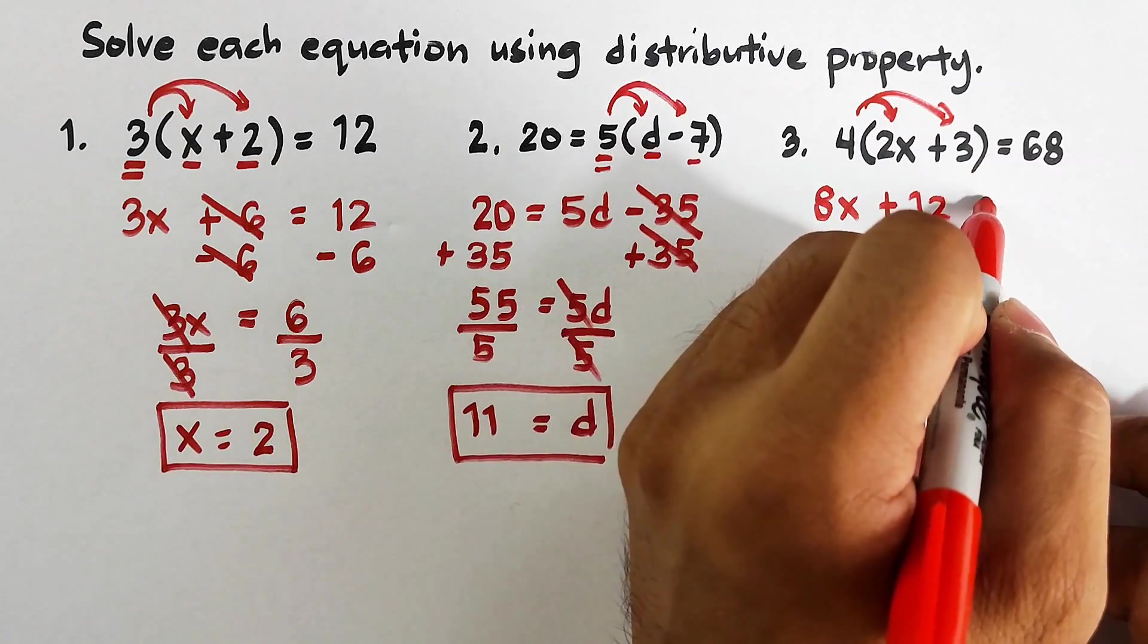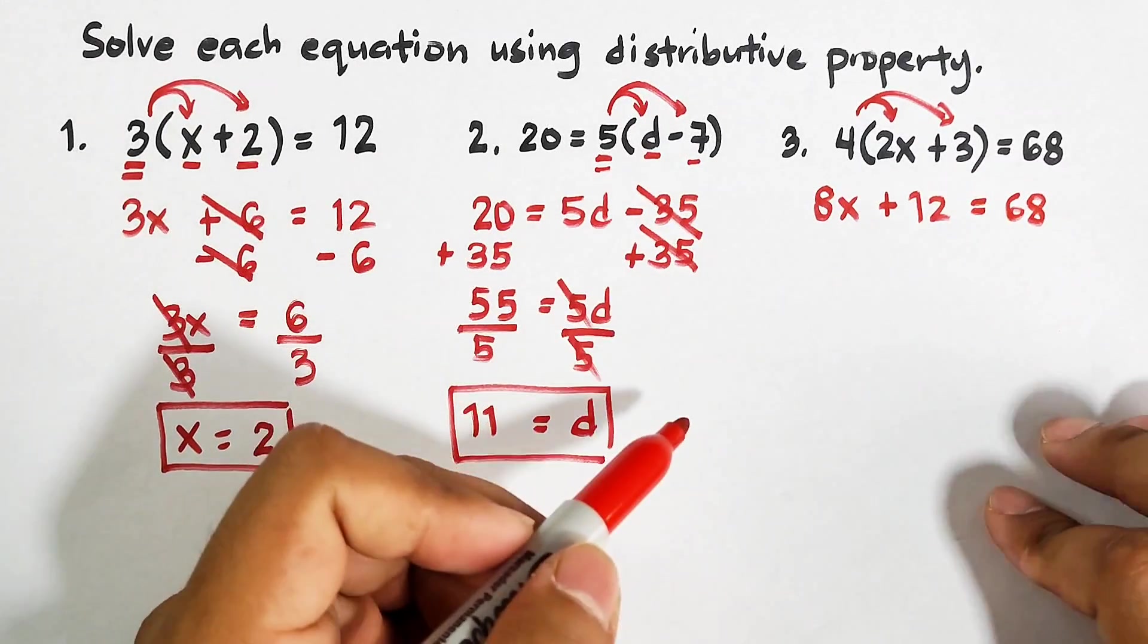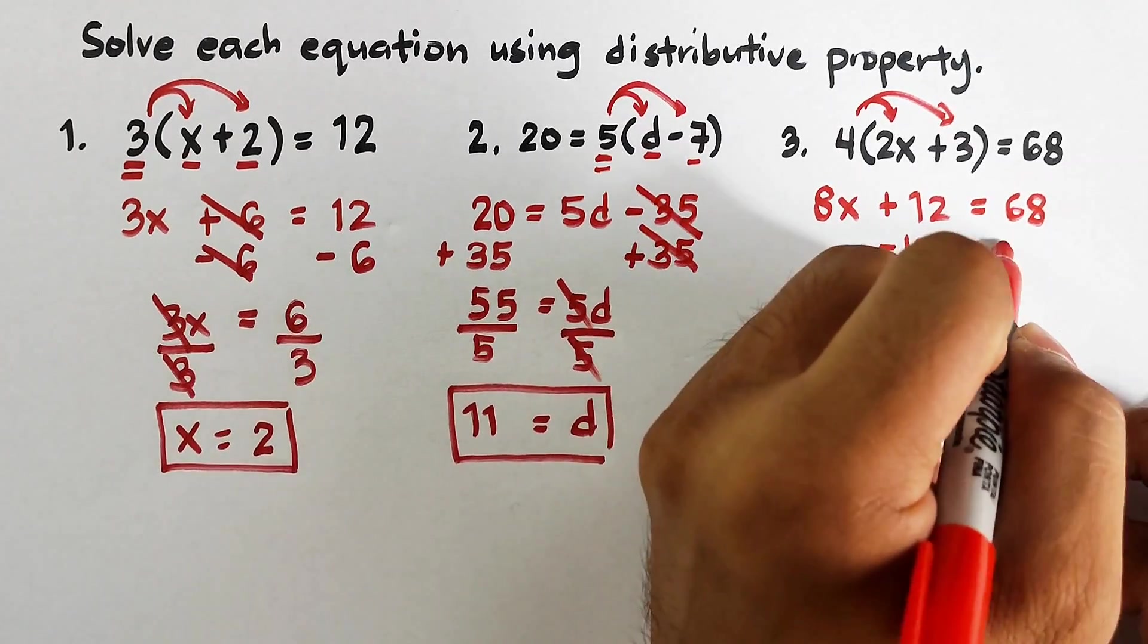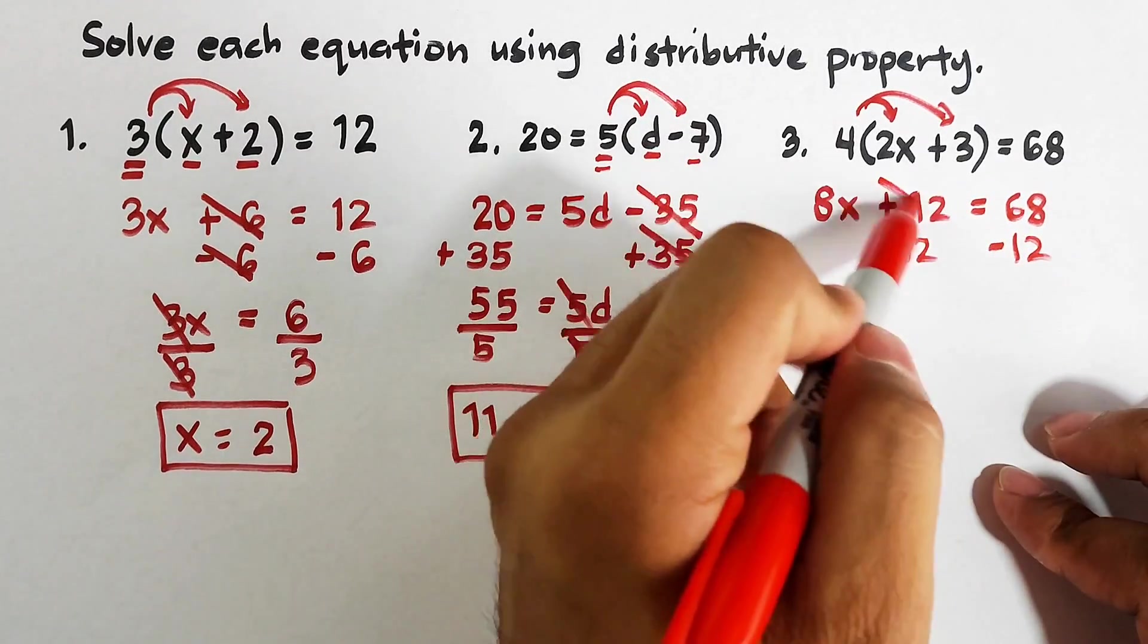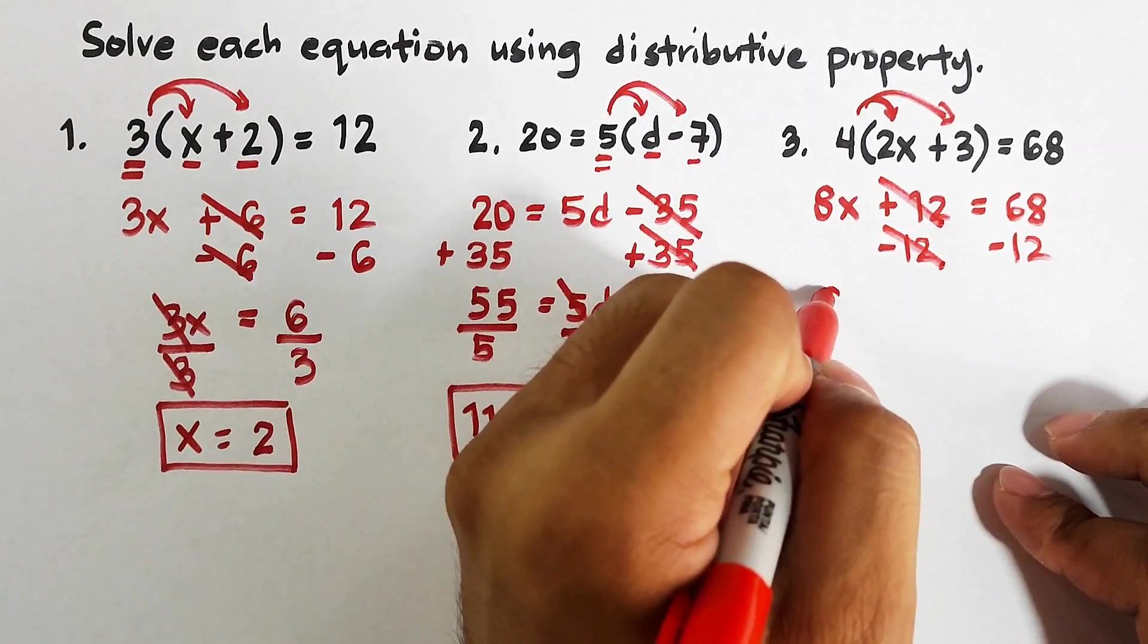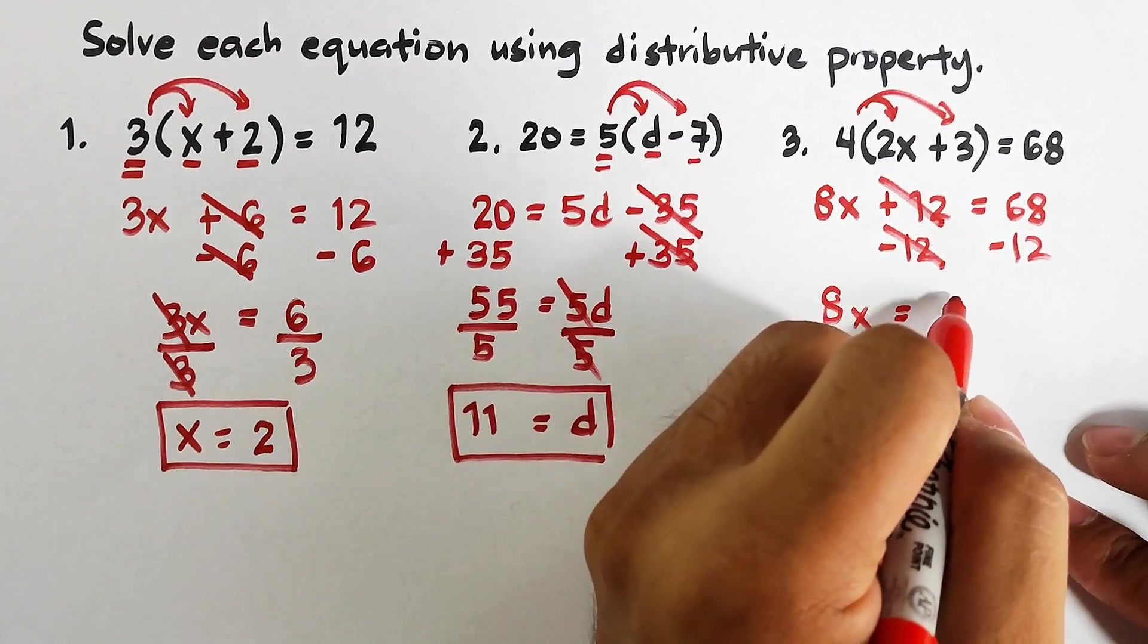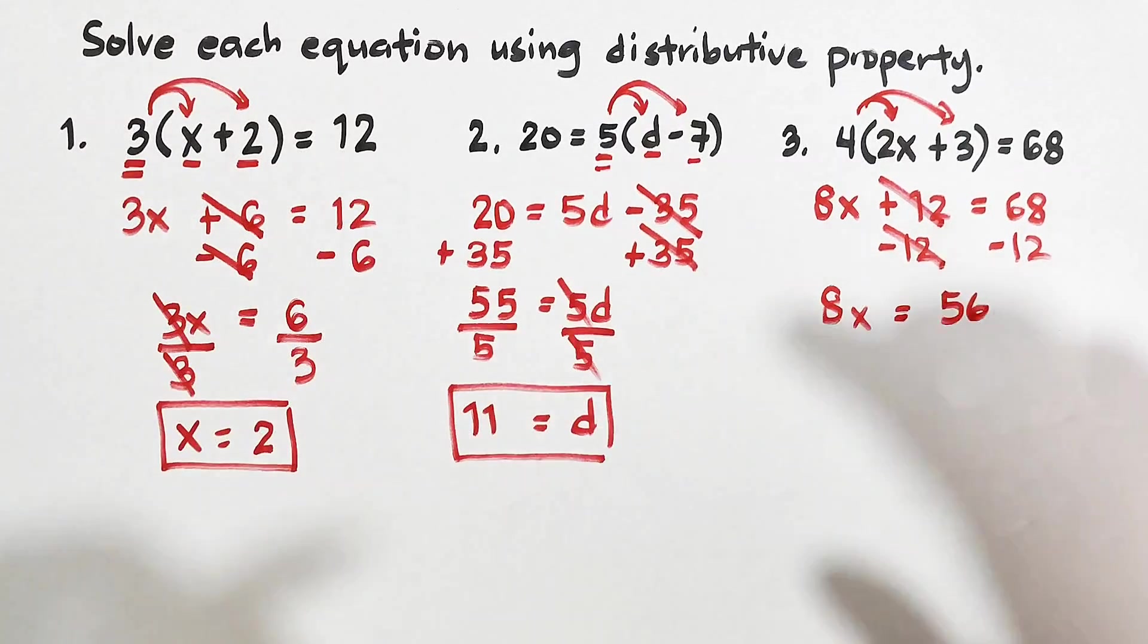Now to remove this, don't forget to subtract both sides of the equation by 12. Cancel, cancel. We have 8x is equal to 68 minus 12, that would be 56. And here we have 8, so this will be our divisor. 8 and 8, cancel this one.